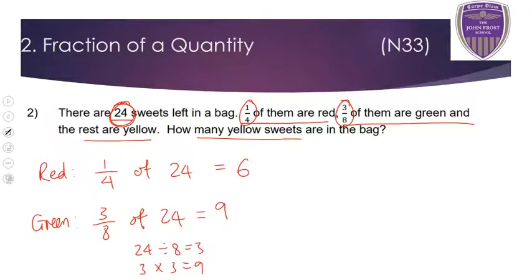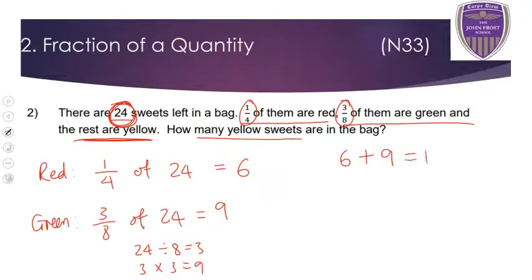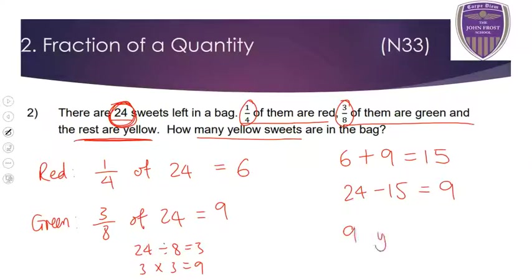The rest are yellow, and there are only red, green, and yellow sweets. We know how many red and green there are, and we know the total. So we do 6 plus 9, which is 15 — that's the red and green together. 24 total take away 15 gives us 9. So there are nine yellow sweets.